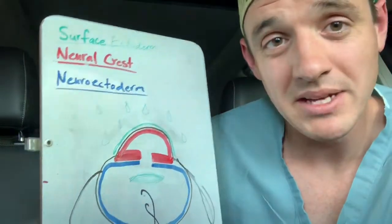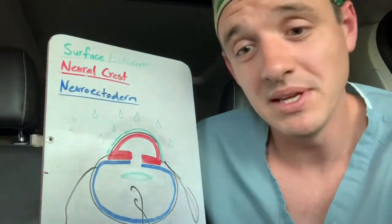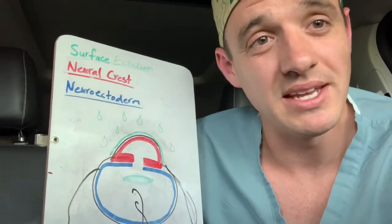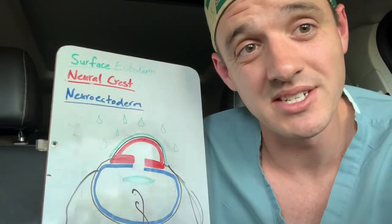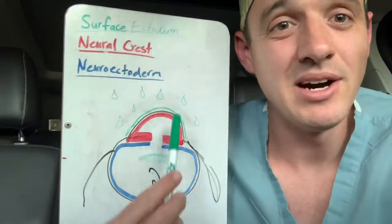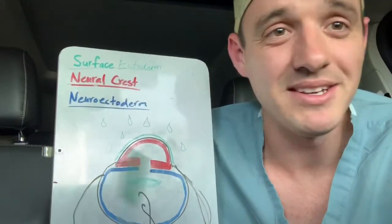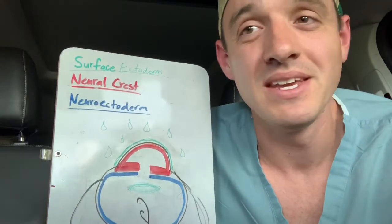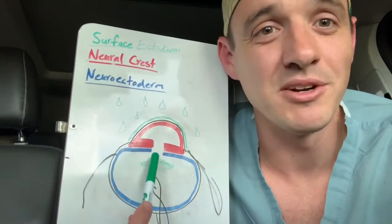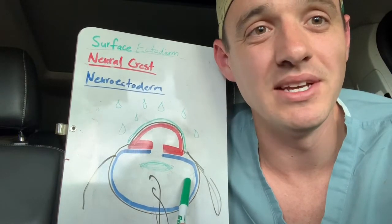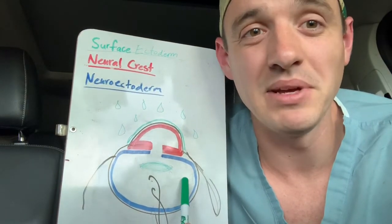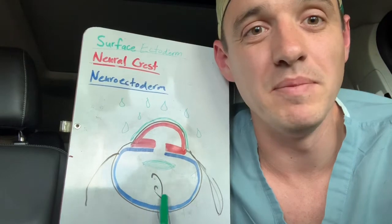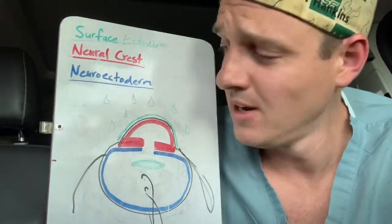The take-home message is: just think about defective neural crest cells being the problem with the iridocorneal dysgenesis diseases. Whatever's on top of that is surface ectoderm, and whatever's below that is neuroectoderm — starting with the iris pigment epithelium, around to the pigmented and non-pigmented of the ciliary body, all the way back to the retina. I'll keep this one short — under five minutes. Catch y'all next week. Peace.